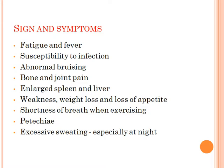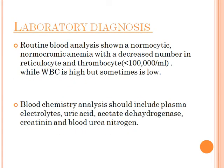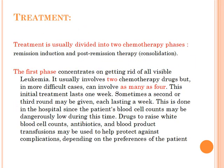Petechiae and excessive sweating especially at night are also noted. For lab diagnosis, routine blood analysis shows a normocytic normochromic anemia with a decreased number of reticulocytes and thrombocytes, while WBC is high but sometimes low. Blood chemistry analysis should include plasma electrolytes, uric acid, lactate dehydrogenase, creatinine, and blood urea nitrogen.